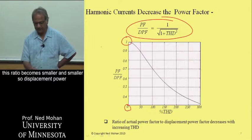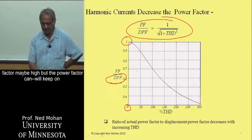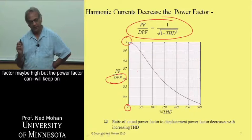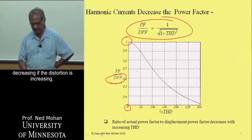But as the distortion increases, this ratio becomes smaller and smaller. So displacement power factor may be high, but the power factor will keep on decreasing if the distortion is increasing.